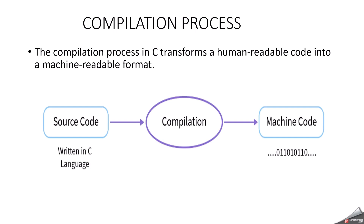You can see in this slide, we have written a source code here, written in C language. After the compilation process, this will become machine code. Machine code means it's in binary — zeros and ones — which can be understood by the machine.